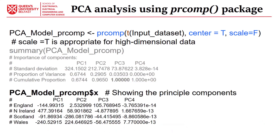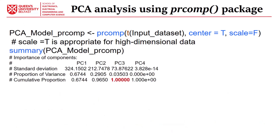When we look at the cumulative proportion for principal components 1, 2, and 3, after principal component 3 we get 100% of cumulative variance. This shows that using three principal components captures 100% of the cumulative variation, so we do not need PC4 for further analysis.